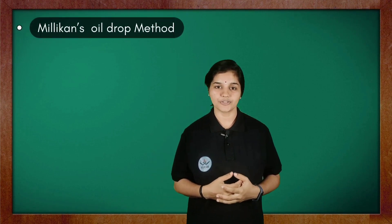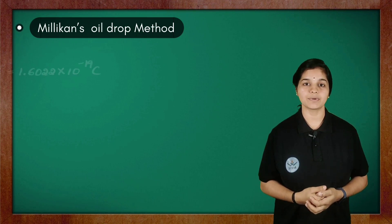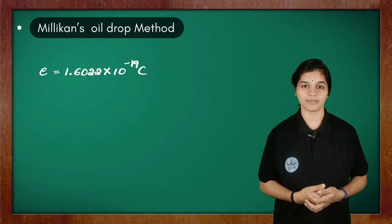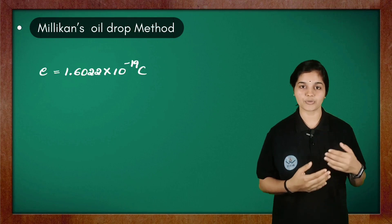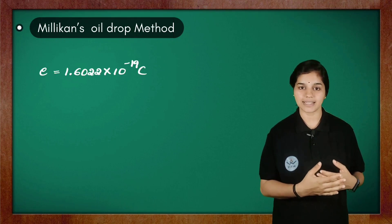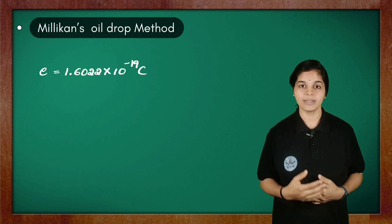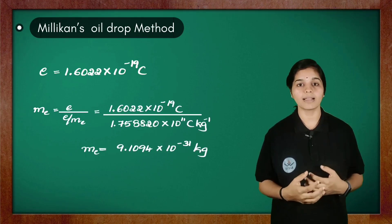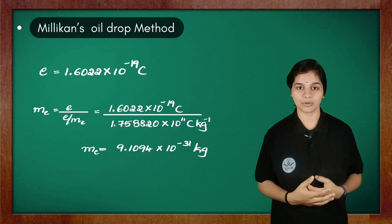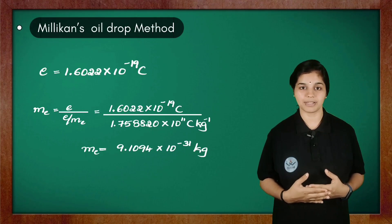From Millikan's oil drop experiment, it was found out that the charge of the electron was −1.6 × 10⁻¹⁹ coulomb. So, using the charge to mass ratio found by J.J. Thomson as well as the charge of the electron found by Millikan, we can calculate the mass of the electron, which came out to be 9.1 × 10⁻³¹ kg.